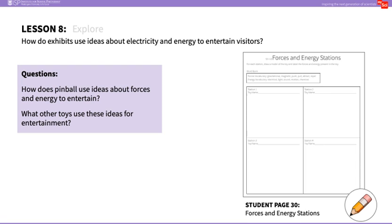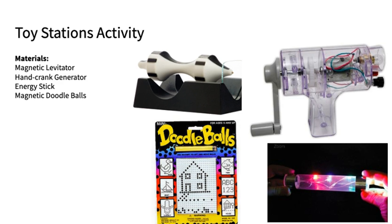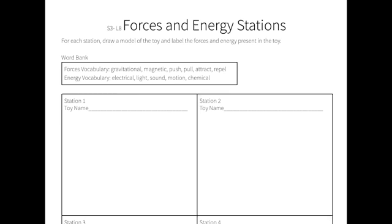In the explore portion of this lesson, students will go around to different stations observing non-contact forces and how energy can travel from place to place. To set up this activity, you'll have four stations: one with a magnetic levitator, one with a hand-cranked generator, one with magnetic doodle balls, and another with an energy stick. Students will travel around to these different stations and draw a model, using key vocabulary terms associated with non-contact forces and energy transfer.